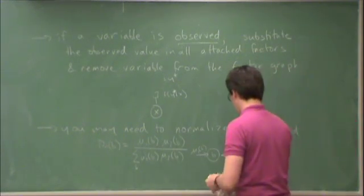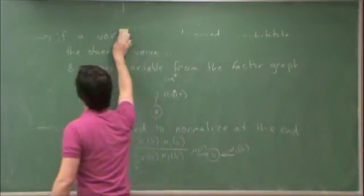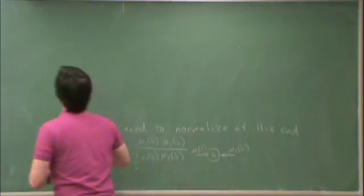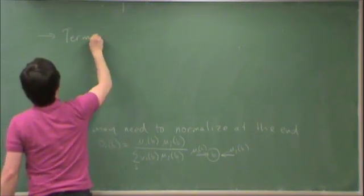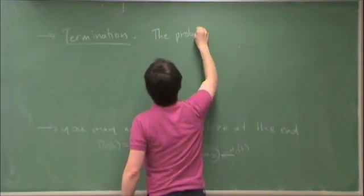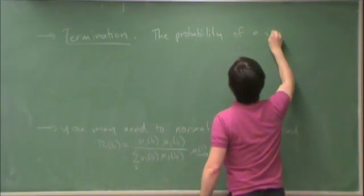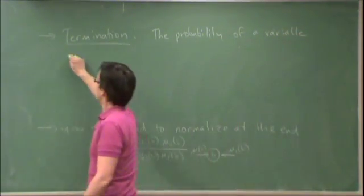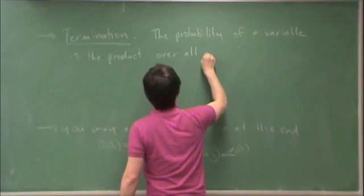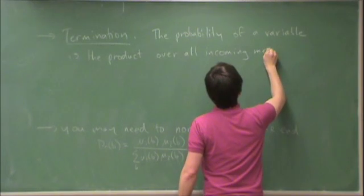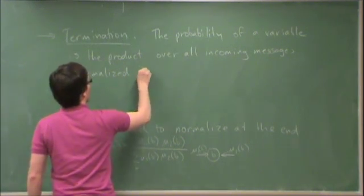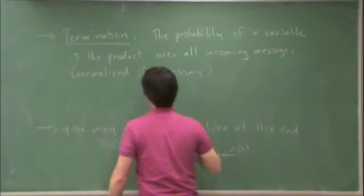Oh, this brings up my final point, like the final rule, which is at the end, termination. The probability of a variable is the product over all incoming messages, possibly normalized, normalized if necessary. And it's easy to see if the normalization is necessary. You just take the sum. If that sum is not equal to 1, then normalize.